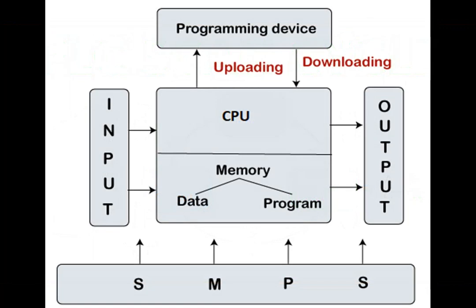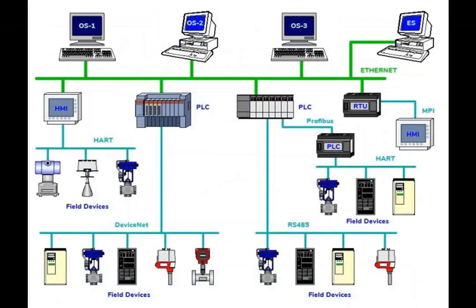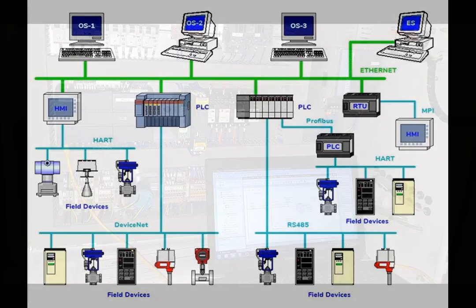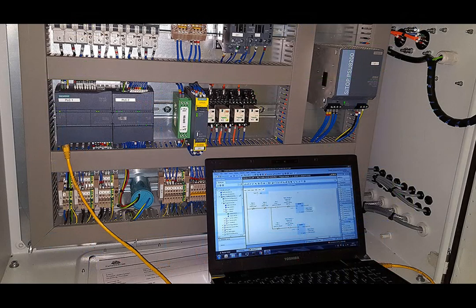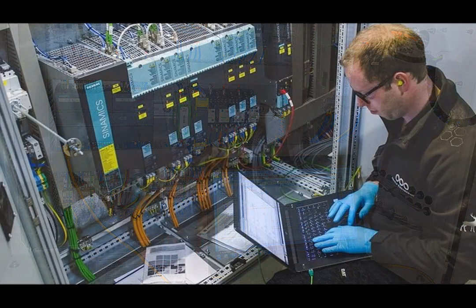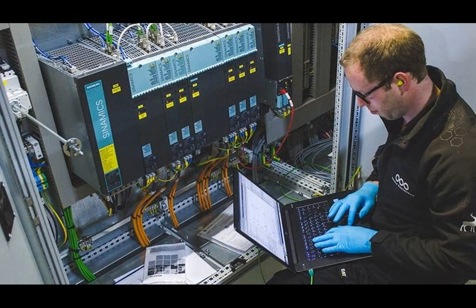PLCs have memory to store the program and data necessary for the control process. This memory can be non-volatile, retained even during power loss, or volatile, reset when power is lost. PLCs often support communication with other devices such as human machine interfaces (HMIs), supervisory control systems, or other PLCs, enabling integration into larger industrial control systems.